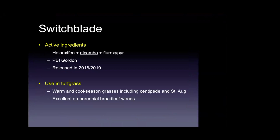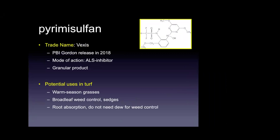Switchblade is another new product containing haloxifen, to be released in late 2018. It is a three-way combination similar to Game On, except 2,4-D choline is replaced with dicamba — so it contains haloxifen, dicamba, and florpyrauxifen. This will be labeled in most major warm-season turfgrasses including centipedegrass, cool-season grasses, and also St. Augustinegrass. It provides a very good three-way combination for controlling many troublesome perennial broadleaf weeds in turfgrass. The next new active ingredient coming in 2018 is pyrimisulfan in combination with panoxilam, sold under the trade name Vexus.